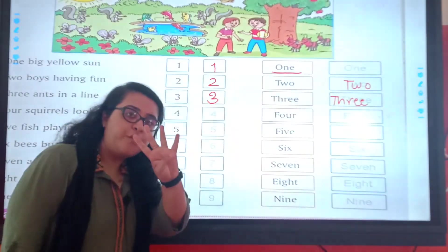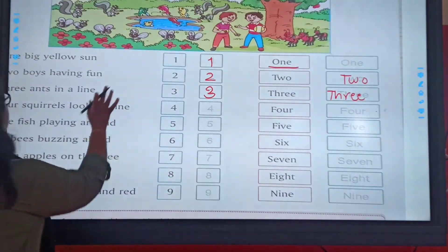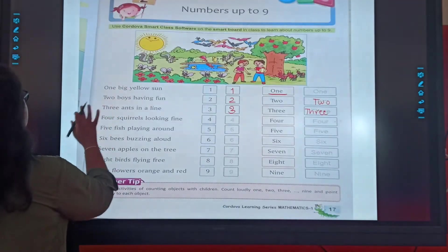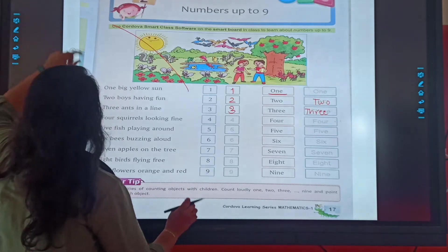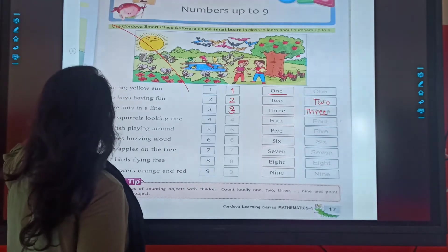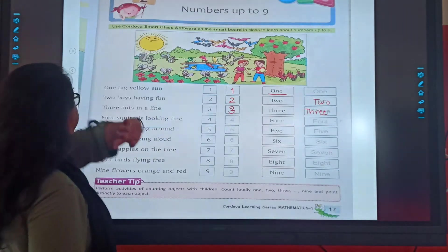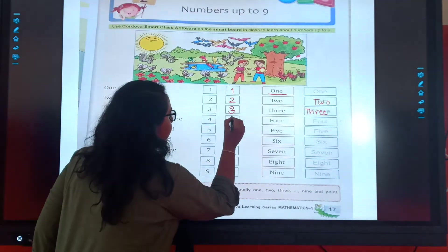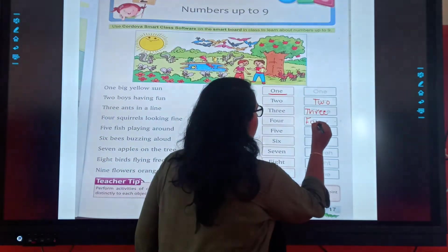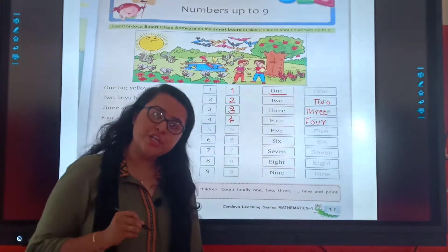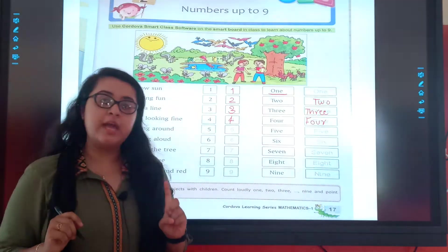Understood? 4. We will write 4. We will use pencil. Okay? You are supposed to write it with pencil. Wait a second. 4. You will write 4. Now you will write the spelling. F, O, U, R. 4. Understood? In this way, you will be solving this spelling, this part and this part.